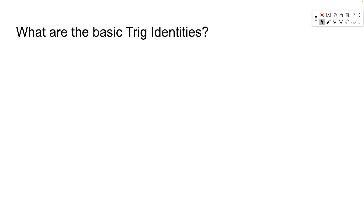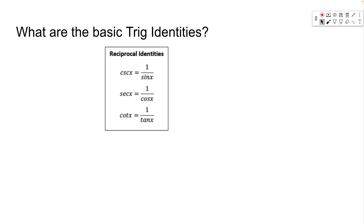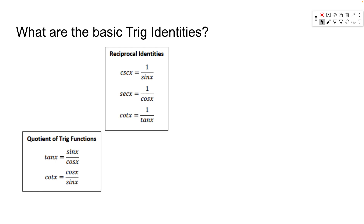There are some basic identities we use to prove others. The reciprocal identities: cosecant is 1 over sine, secant is 1 over cosine, and cotangent is 1 over tangent. Those are their definitions. There are also quotient identities: tangent equals sine over cosine, and cotangent equals cosine over sine. We define tangent as opposite over adjacent, but we also think of it as sine over cosine.